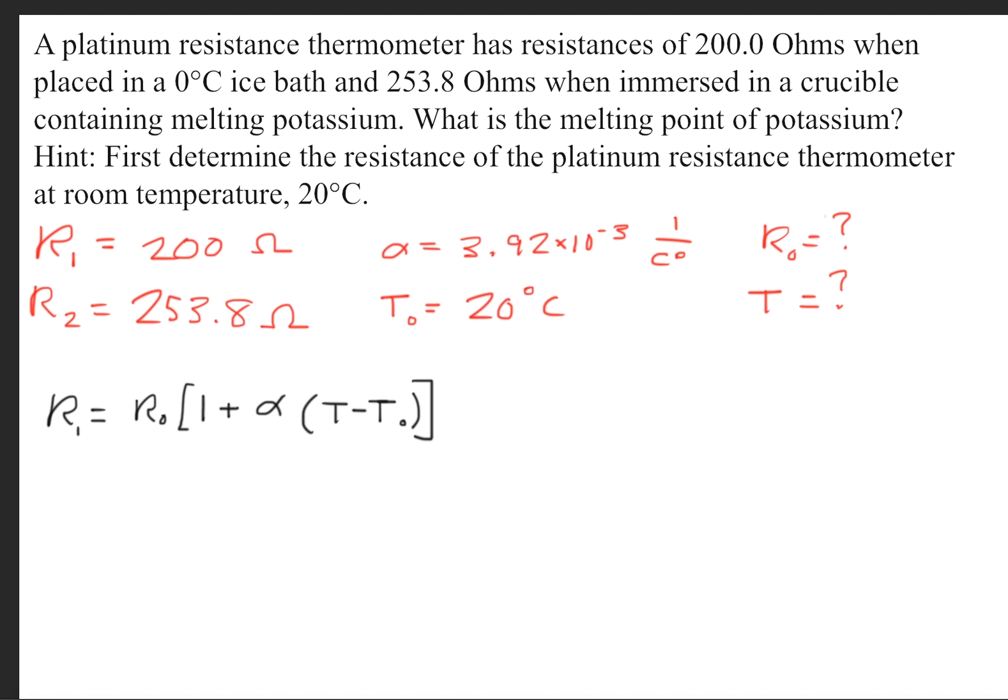Now we need to first find R0, and eventually we need to find the temperature, the melting temperature for potassium. So to find the melting point, we need to know the resistance of the thermometer at the reference temperature.